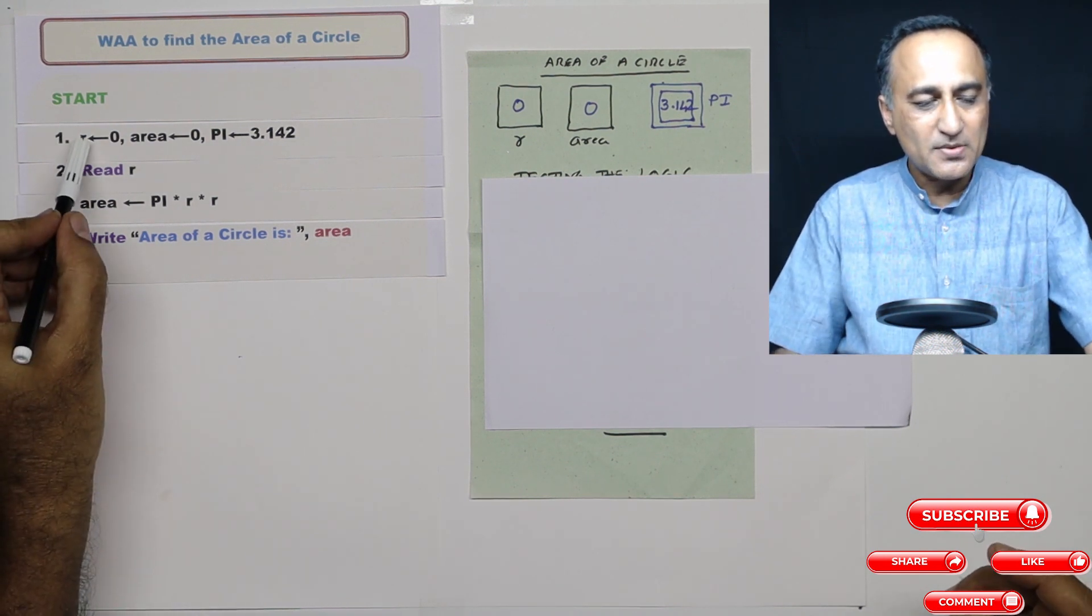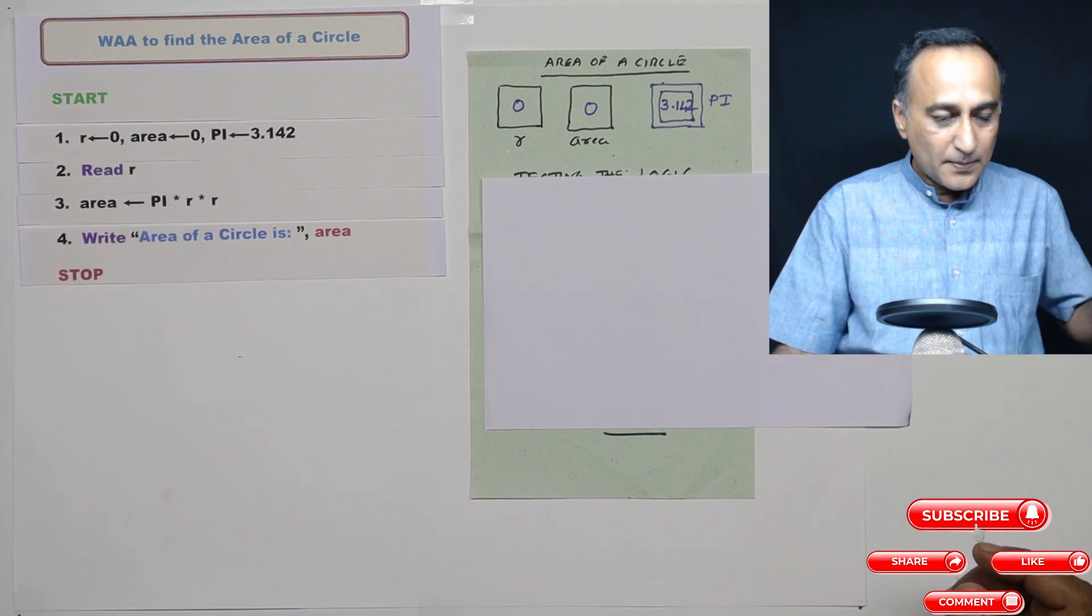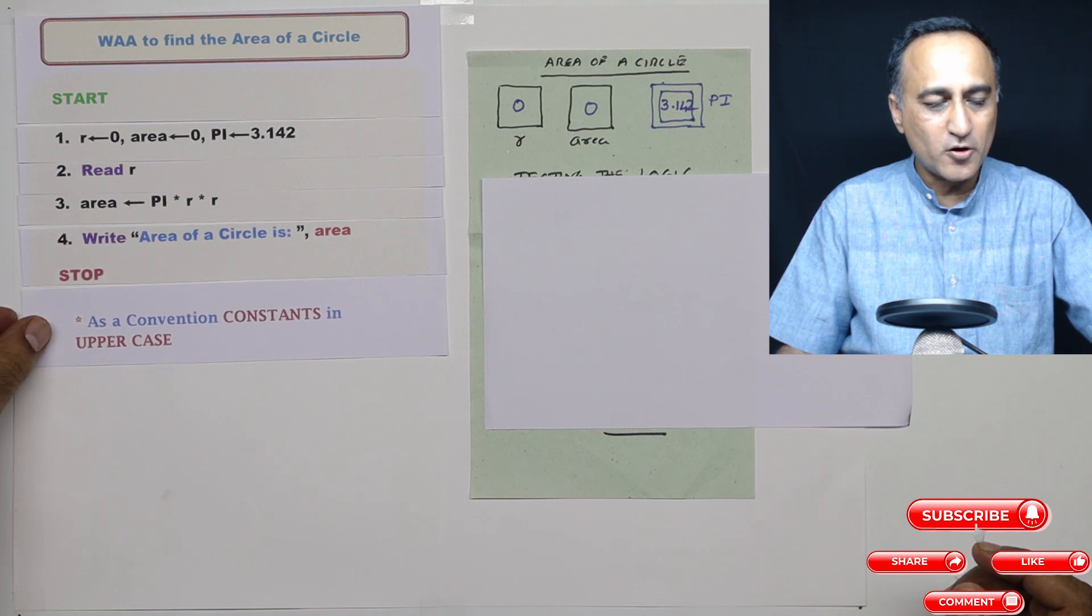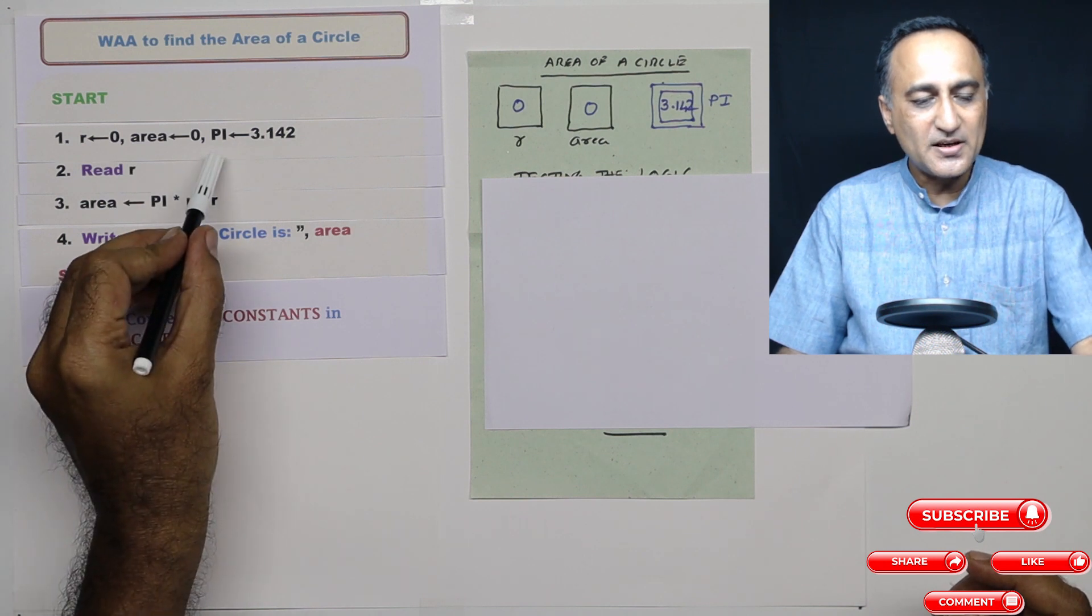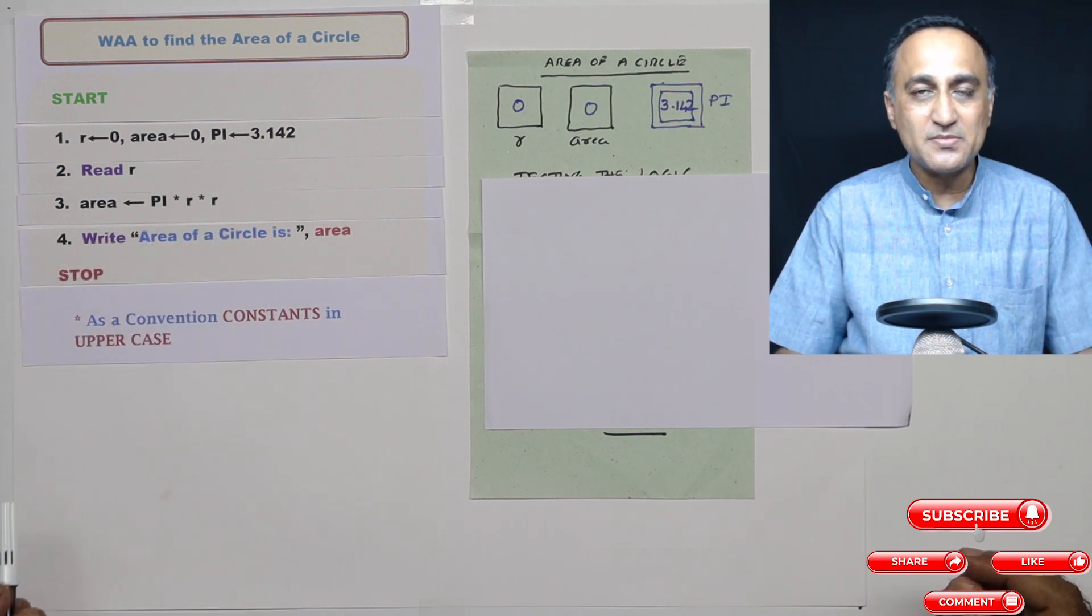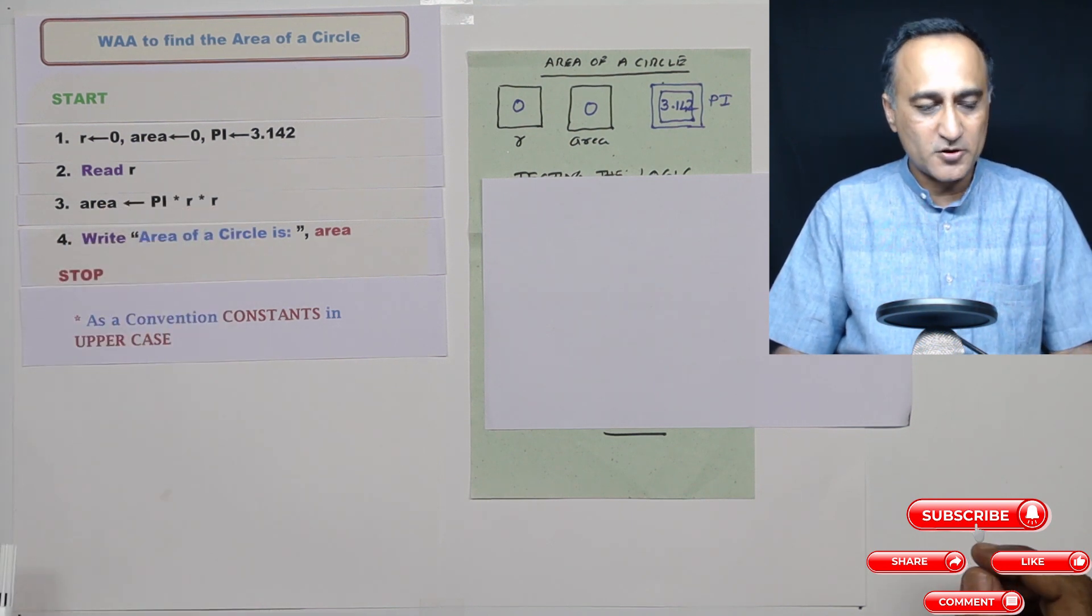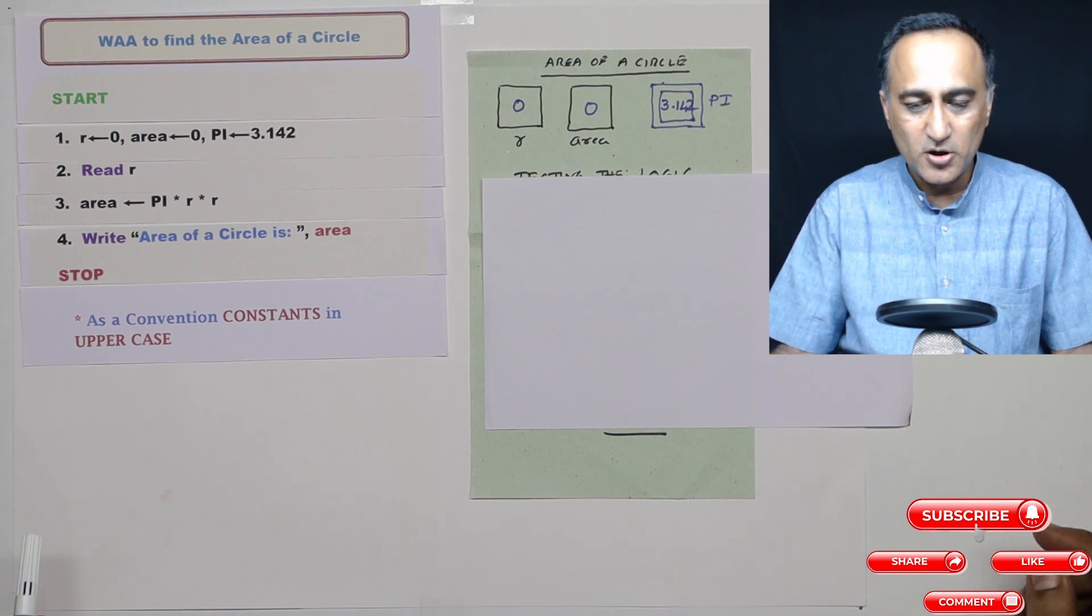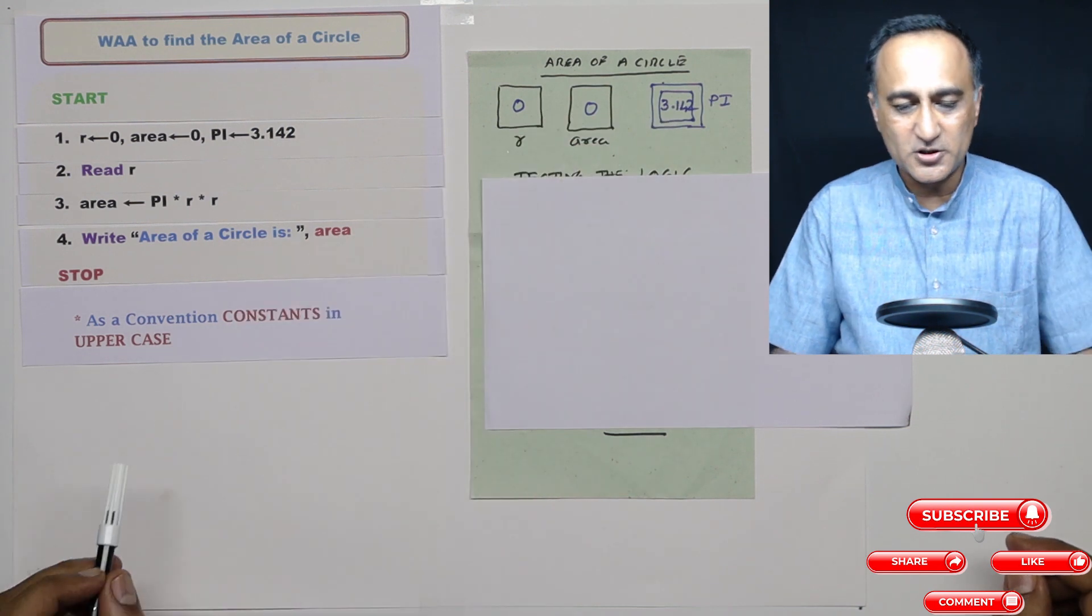A few things I need to tell you: in order to differentiate variables like R and area from a constant, it is a good practice whether you're writing a program or drawing a flowchart or writing an algorithm, that as a convention, represent constants with uppercase names. So just by looking at it, you are quickly able to tell that this particular fellow happens to be a constant. Just a good convention and good practice, not compulsory, it's your choice. That's why I've shown it with a blue double box indicating it's a constant.